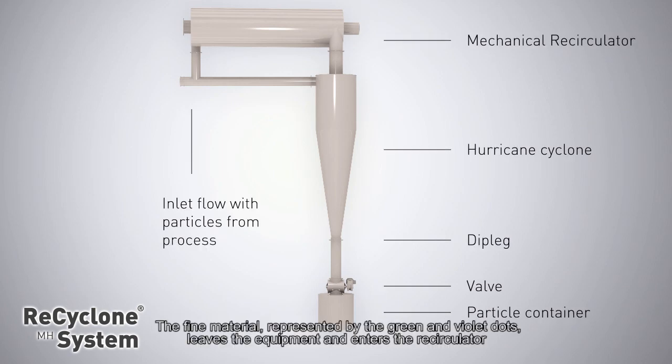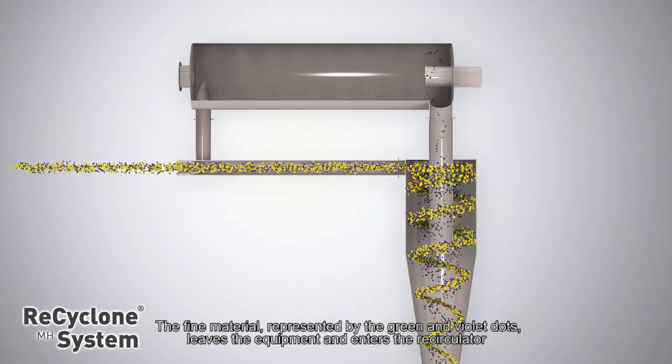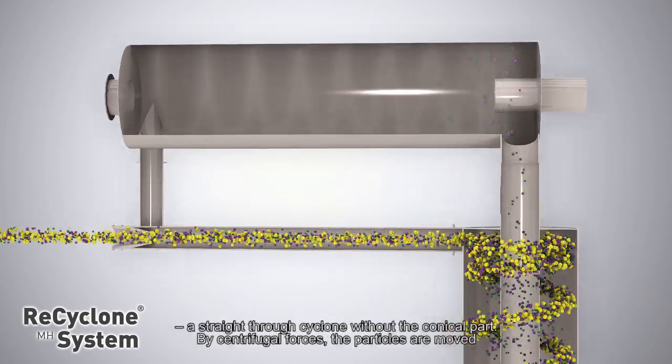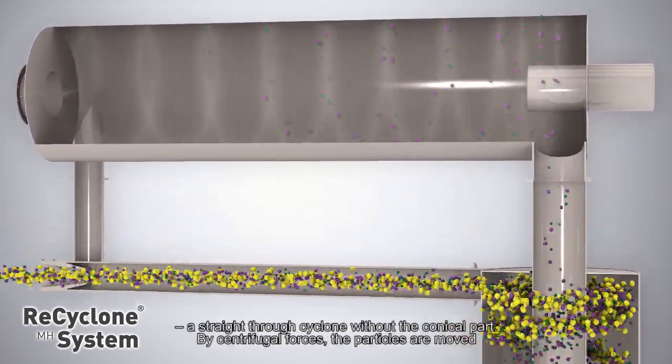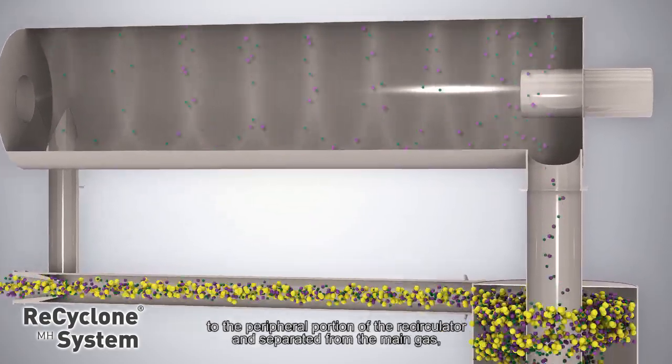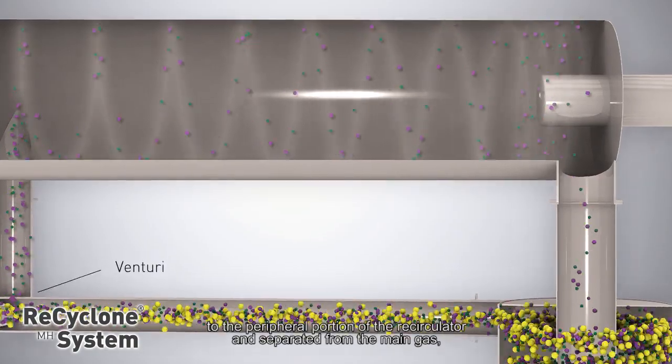The fine material, represented by the green and violet dots, leaves the equipment and enters the recirculator, a straight through cyclone without the conical part. By centrifugal forces, the particles are moved to the peripheral portion of the recirculator and separated from the main gas, which flows through the axis and exits the equipment out into the atmosphere.